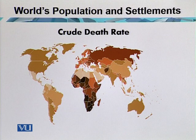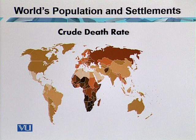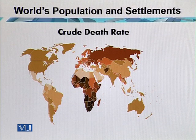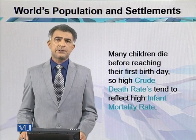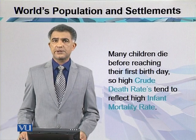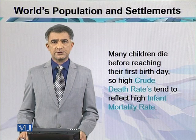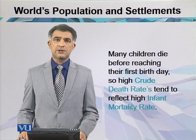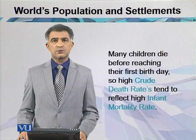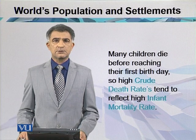This map shows the crude death rate — the number of deaths per thousand per year, also called CDR or mortality rate. The darker shades again represent less developed economies. This figure has declined more dramatically than births and fertility rates. Within the crude death rate, the infant mortality rate is very important — this refers to the maximum number of deaths occurring before the age of one.